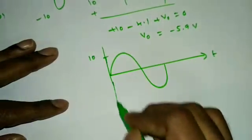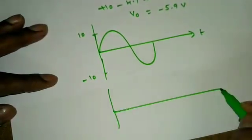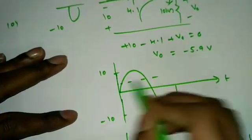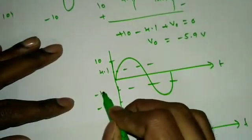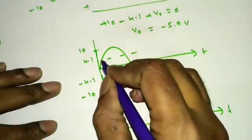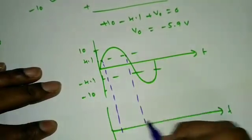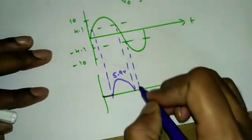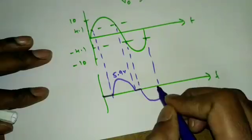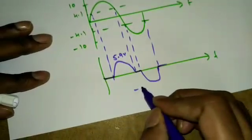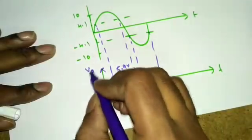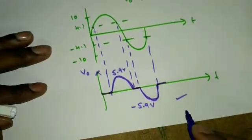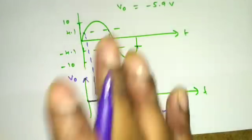The output waveform shows that below ±4.1 V input, the Zener diodes do not break down, so Vo = 0 in that region. Above 4.1 V input the output clips at +5.9 V, and below −4.1 V input it clips at −5.9 V. This gives the final clipped wave shape. I hope this is clear — please post a comment if you have any doubts.